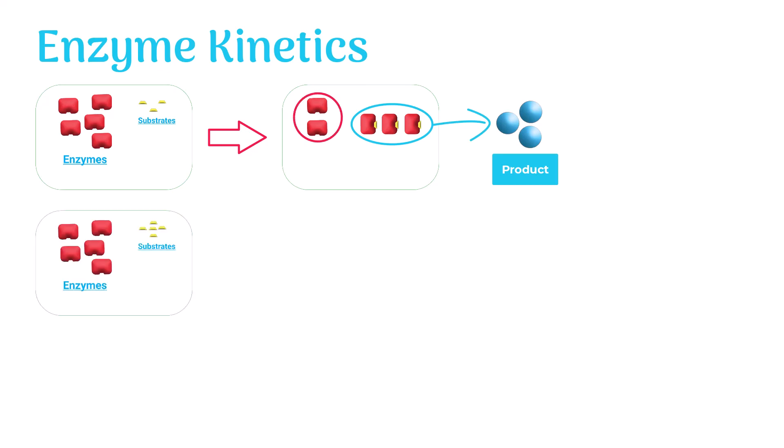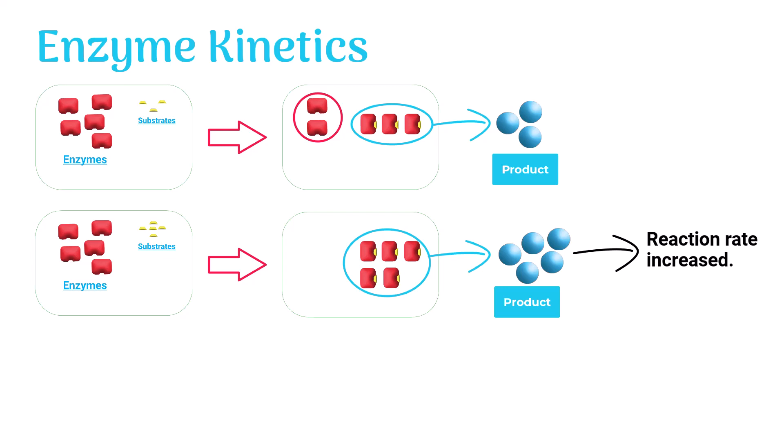When we add more substrate, the free enzymes also start acting on the new substrate molecules. So, just like other enzymes, they also start modifying the substrates to form the product. This way, more product is formed in the reaction within the same time. Increase in the product amount indicates that the rate of reaction is also increased.